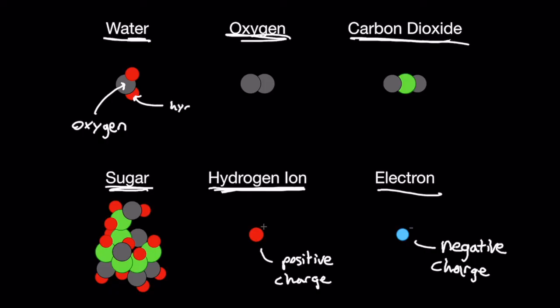Here, oxygen is black, hydrogen is red, carbon is green, and electrons are blue. The chemical formula for sugar is C6H12O6.